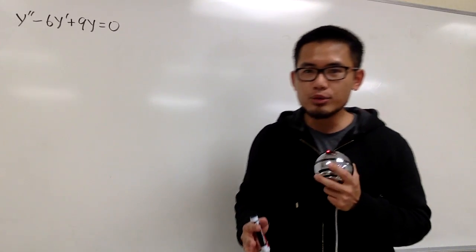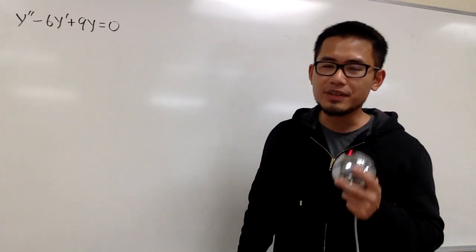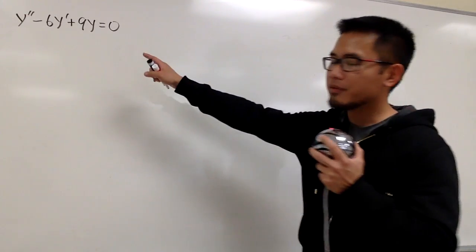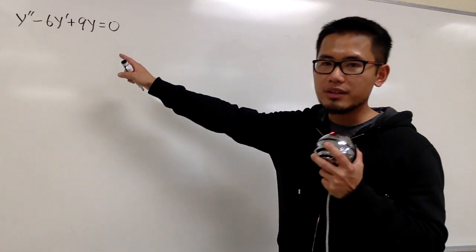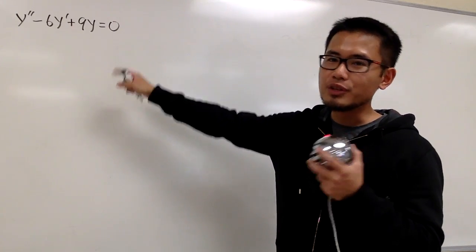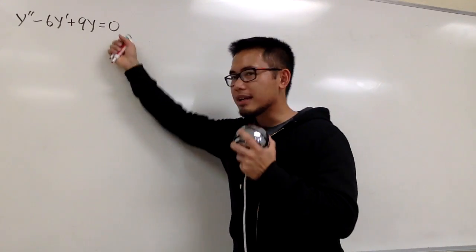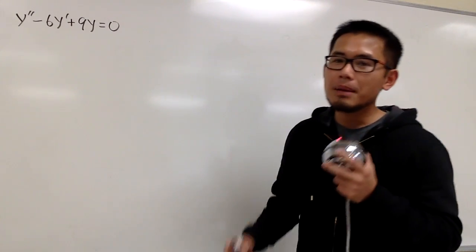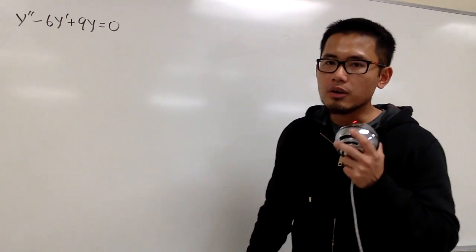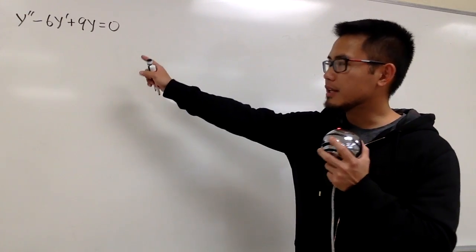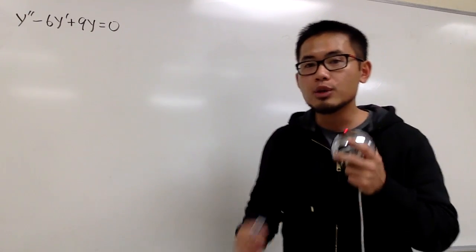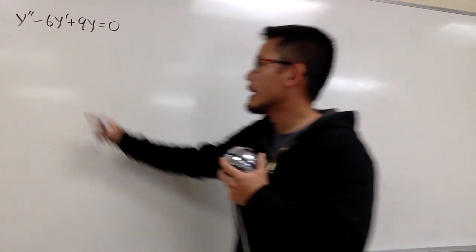This is a continuation from the previous video. Here we'll talk about how to solve a second-order linear differential equation with constant coefficients where the right-hand side is equal to 0. But this time, the root for the characteristic equation is being repeated. So let's check this out.